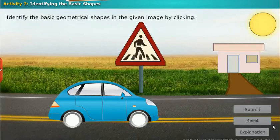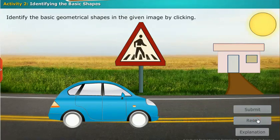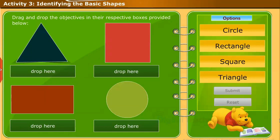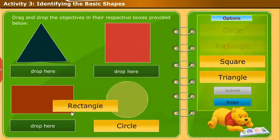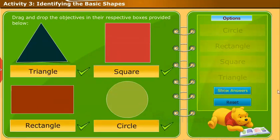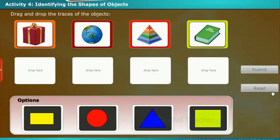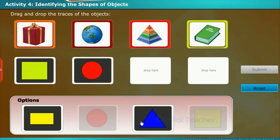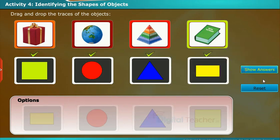Identify the basic geometrical shapes in the given image by clicking. Let us perform an activity to identify the shapes of objects. Drag and drop the objects in their respective boxes provided below. Drag and drop the traces of the objects.